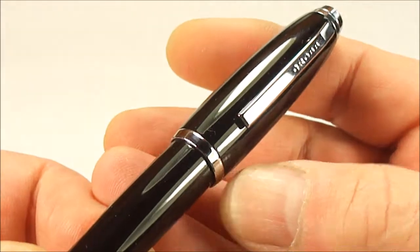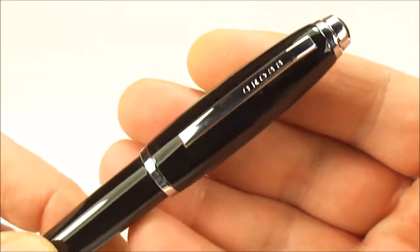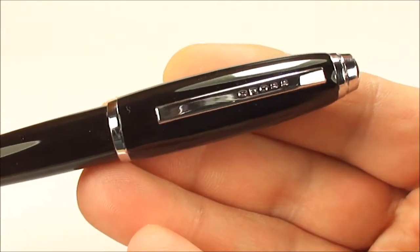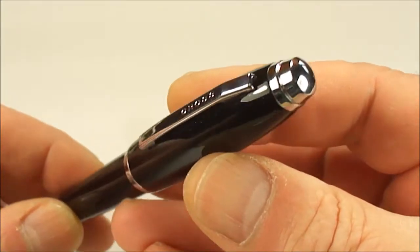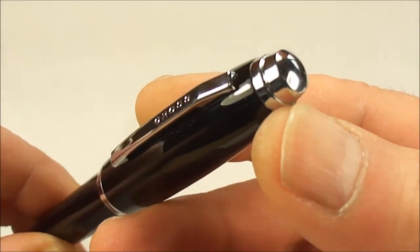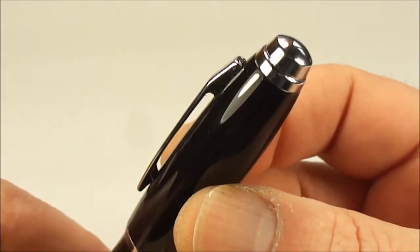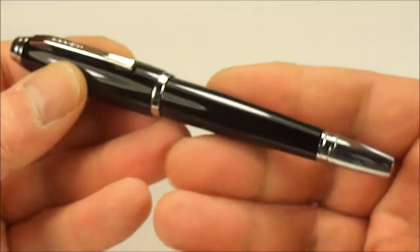And well, the chrome trim is everywhere. You can see just to the bottom of the cap there, we've got a chrome cap band, and we've got a chrome Cross clip to the very top there. And you can see the word on the clip says Cross, and then to the very top there you can see this—well, the top of the cap again has this chrome stud, if you like.